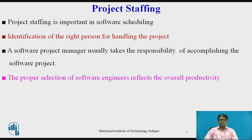Project staffing defines the organization of different project teams used in scheduling. It includes the identification of the right person for handling the project and the assignment of required responsibilities to the selected team. Different projects may require different skills and knowledge. A software project manager usually takes responsibility for accomplishing the software project, identifying good experienced software engineers, and choosing the team with proper organization. The proper selection of software engineers reflects the overall productivity of the entire software team.